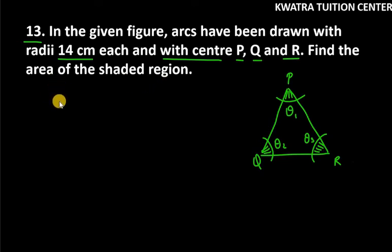So we have to find the area of the shaded region. First, you can see this is our parts. Here we have to find the area of three sectors, so area of shaded region is equal to area of sector one.